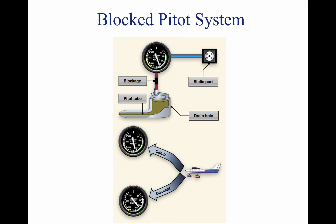The ASI has a diaphragm in which dynamic air pressure is entered. Behind this diaphragm is a reference pressure called static pressure that comes from the static ports. The diaphragm pressurizes against this static pressure and, as a result, changes the airspeed indication via levers and indicators. The pitot tube may become blocked during flight due to visible moisture. Some aircraft may be equipped with pitot heat for flight in visible moisture. Consult the AFM/POH for specific procedures regarding the use of pitot heat.